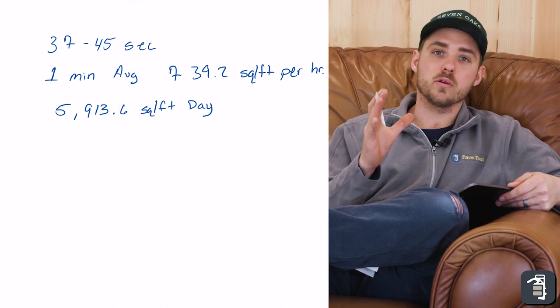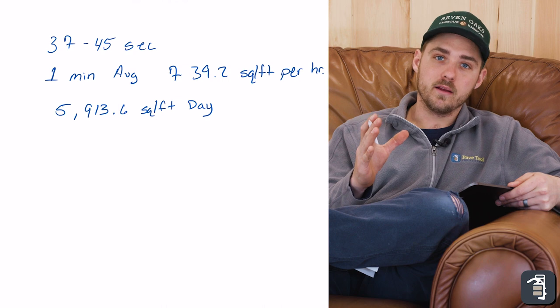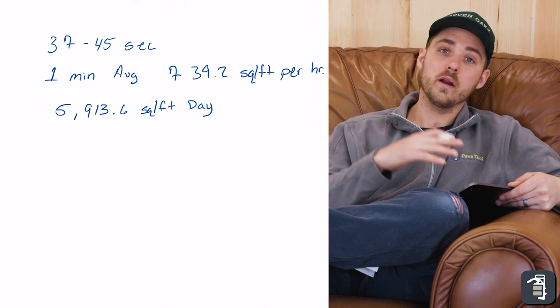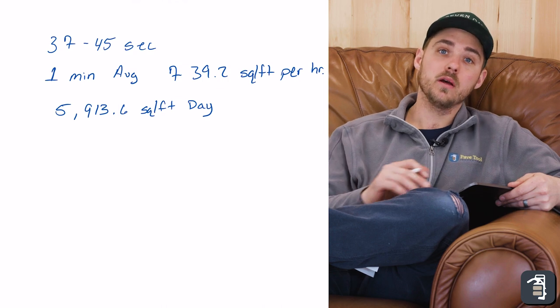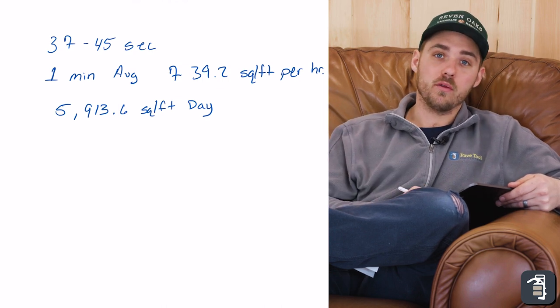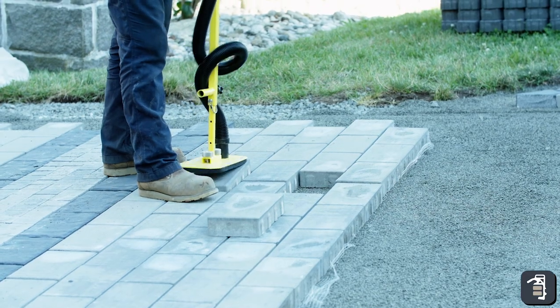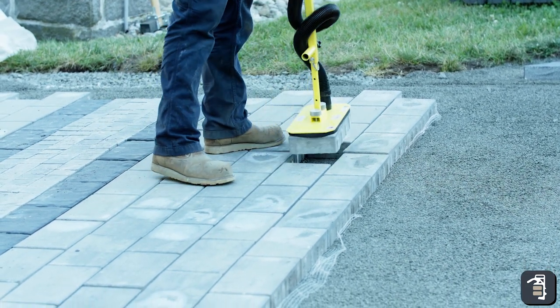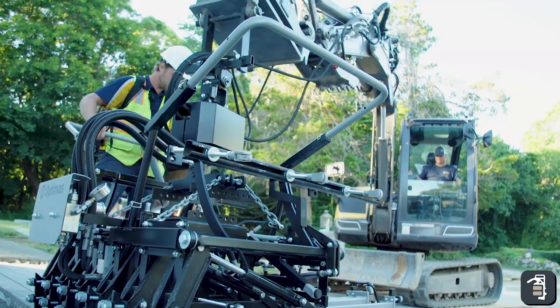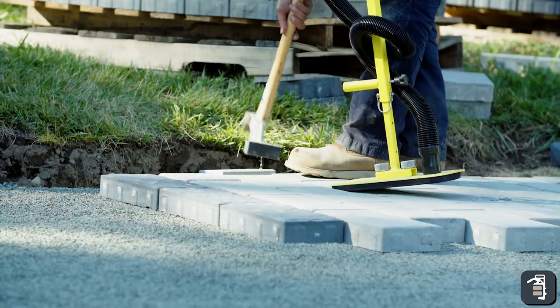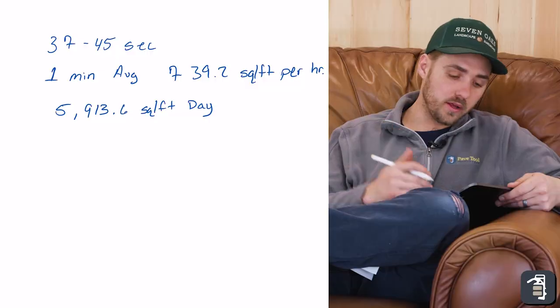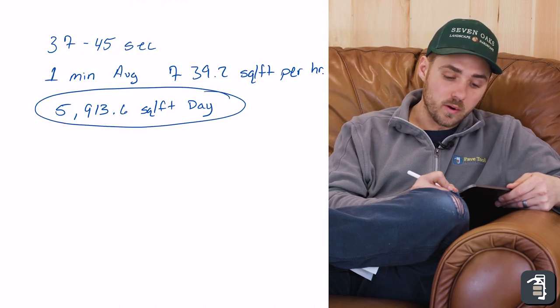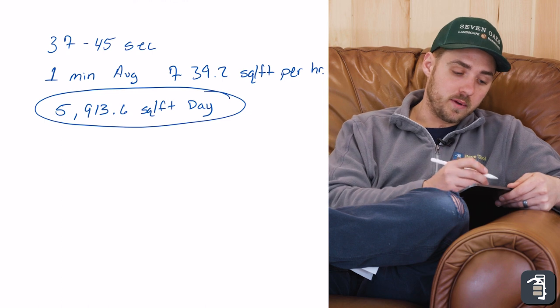5,913 square feet a day, that is a substantial amount of area to be laid mechanically with a machine and there's only two guys. One obviously in the machine laying them and one that's going to be out in the field either, if it's a running bond, taking out the two pieces so you can set the next layer and then putting the two pieces back in or just help to bring the pavers in, do some adjustments, pull some string lines as you're installing. So obviously this here is going to be your most efficient way of doing it, laying mechanically.